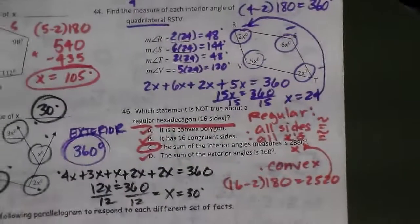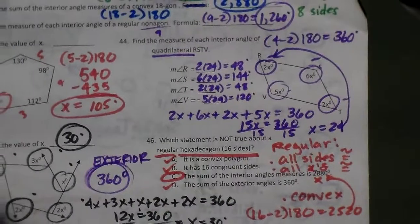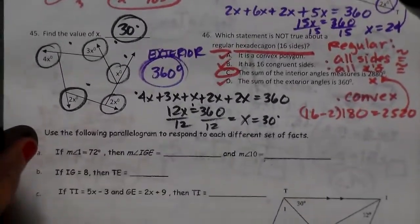That is using your properties of interior angle sums of your polygons. I'm going to stop here and I will go to the next section in the next video.